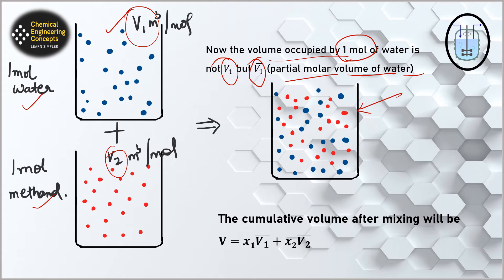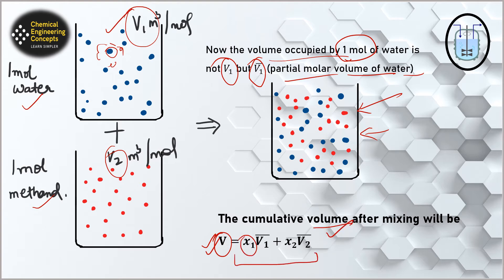Why do changes happen? Because now water molecules are no longer surrounded only by water molecules; methanol molecules are also present. The final volume of the mixture depends on the interactions. After mixing, the cumulative volume can be calculated as: V = X1 × V1 bar + X2 × V2 bar. If mixed in equal quantities, X1 = 0.5 and X2 = 0.5, where V1 bar and V2 bar are the partial molar volumes of water and methanol respectively.